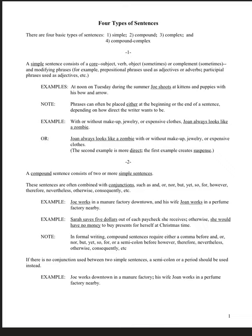Welcome to part two of run-on sentences. In part one we covered the four basic types of sentences — simple and compound. In part two we're going to cover complex sentences and compound complex sentences. The key reason we're covering these items is so that we can avoid run-on sentences, which is the number one problem that students have in their writing.